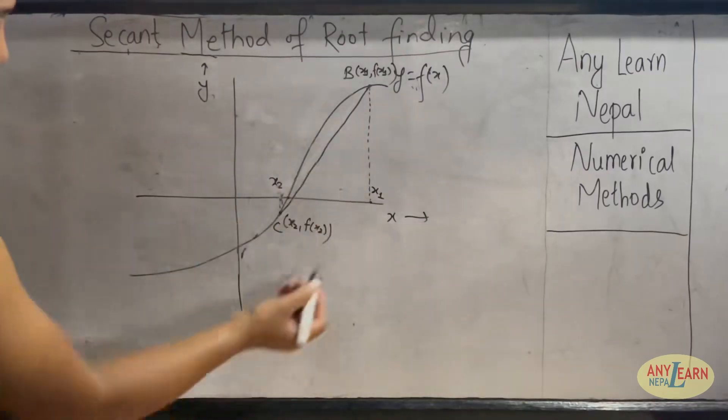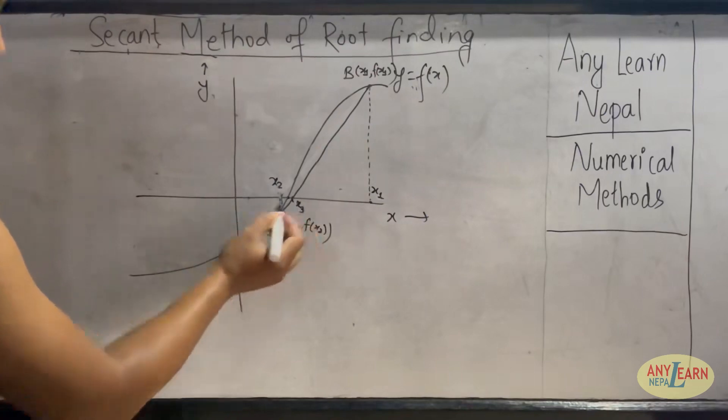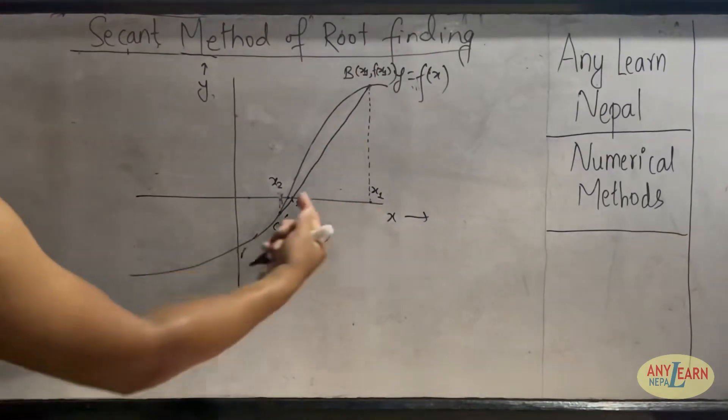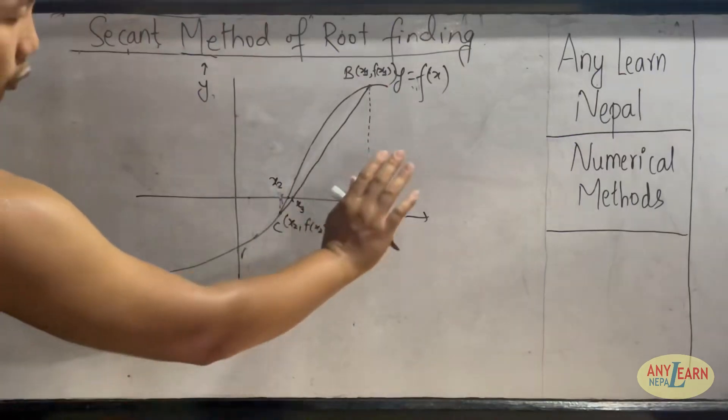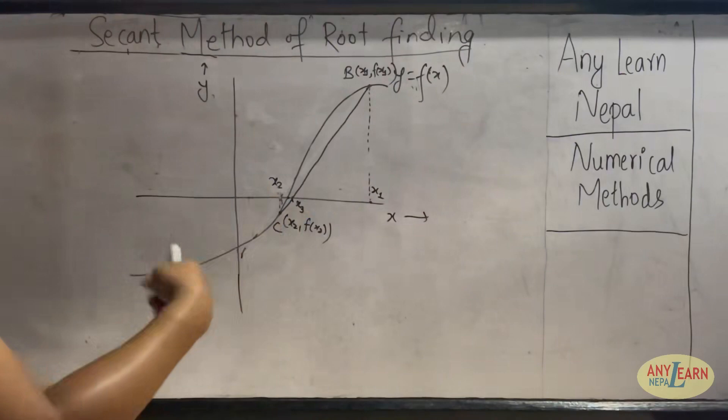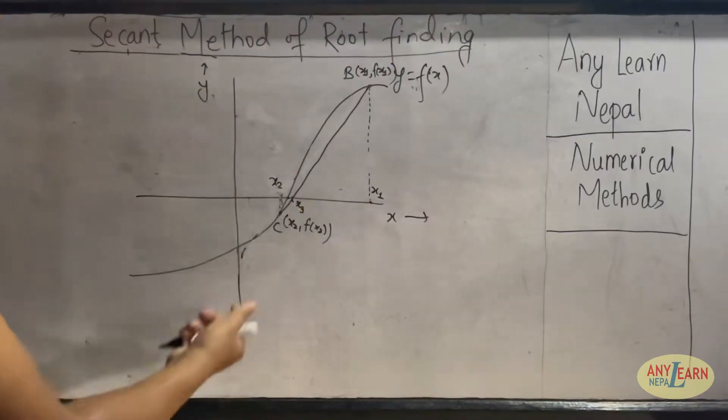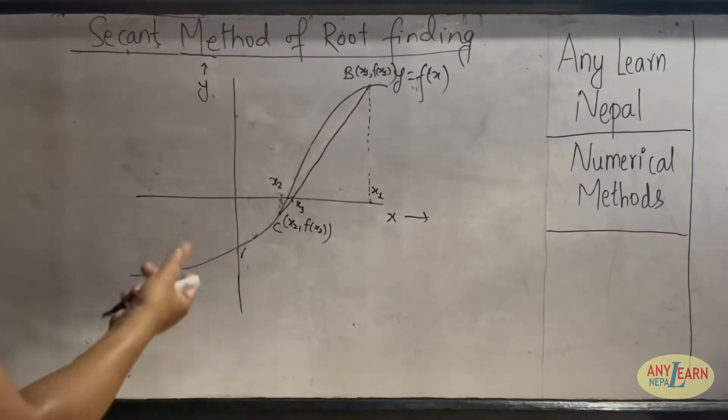Again, this new secant crosses the axis at one point. So let that point be x3. Now again taking x2 and x3, now x1 will be of no use. By taking the points x2 and x3, we are going to repeat the process until we get close approximation to the root of the function. So this is the secant method.